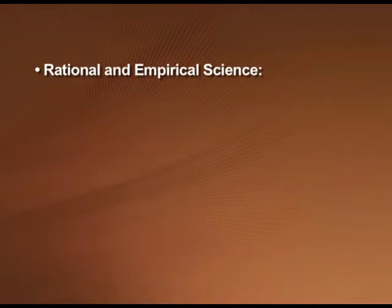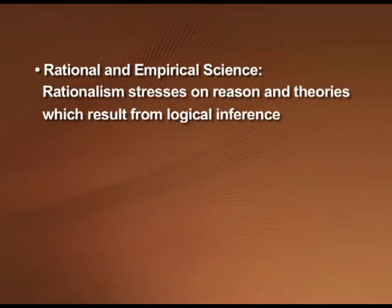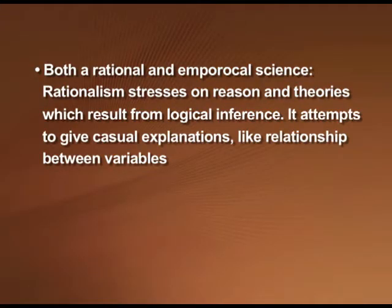An important point is that sociology is both a rational and an empirical science. Rationalism stresses on reason and theories which result from logical inference, that is systematic investigation. It attempts to give causal explanations, like the relationship between different variables — for example, development leads to higher income. Whereas empirical science emphasizes experiments and facts which result from observation and experimentation. Sociologists use different methods to conduct sociological research, and this chapter, 'Doing Sociology,' is about doing research.